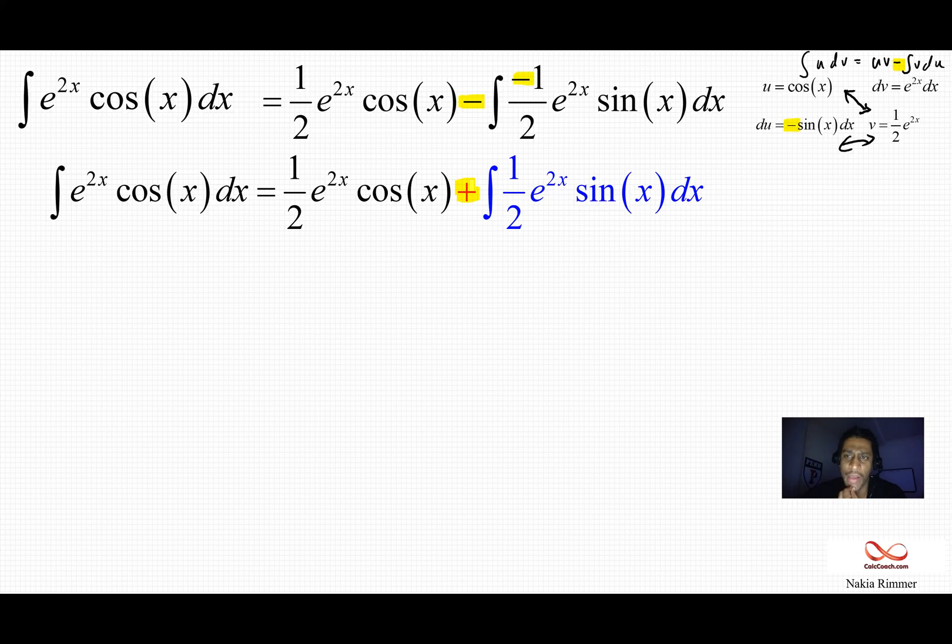I'll choose u to be sine x. And then dv is going to be e to the 2x dx. Let's take the half with it. Instead of pulling the half out, let's just keep it with it. And we'll replace this entire blue integral here.